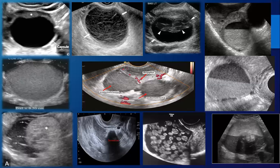Welcome to the third part of the ovarian lesions. We discussed in the first part how to find the ovary and locate it, and diagnosed the simple ovarian cyst, which is very common. In the second lecture we went through more complicated cysts.